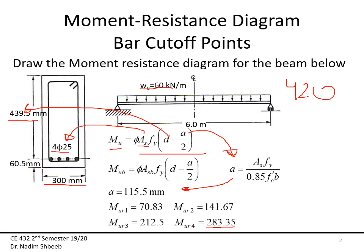Plugging that in, the ultimate moment for all four bars is 283.35 kN·m. Now I need the resistance moment for each individual bar. The simplest approach: since 'a', 'd', and 'fy' are constant, I just divide 283.35 by 4, giving 70.83 kN·m per bar. Multiplying by 2 gives the resistance for two bars, and by 3 for three bars — this is an approximate method.